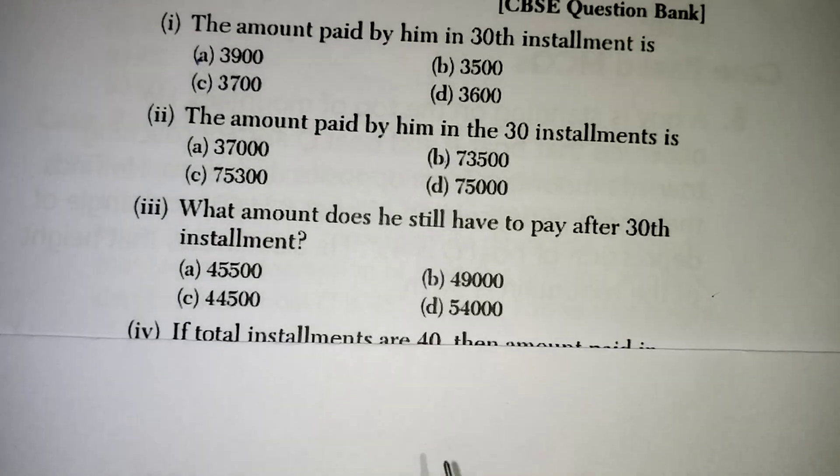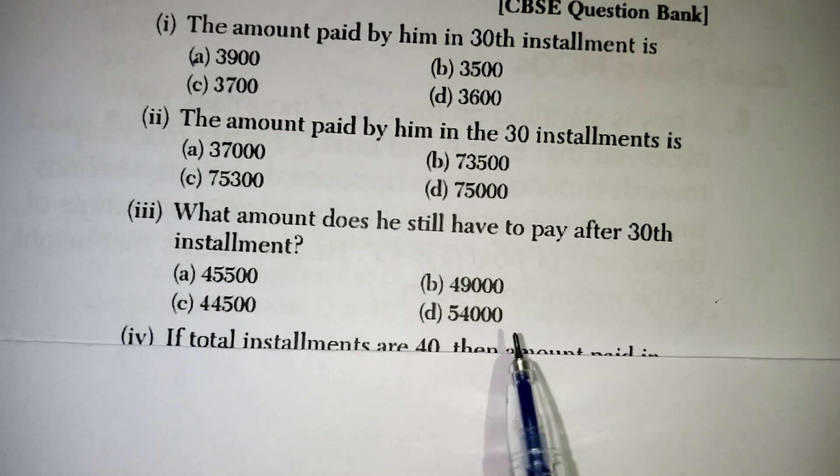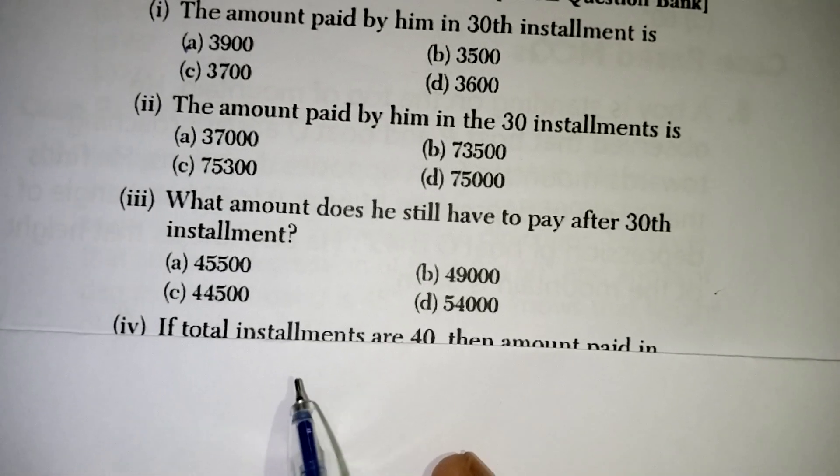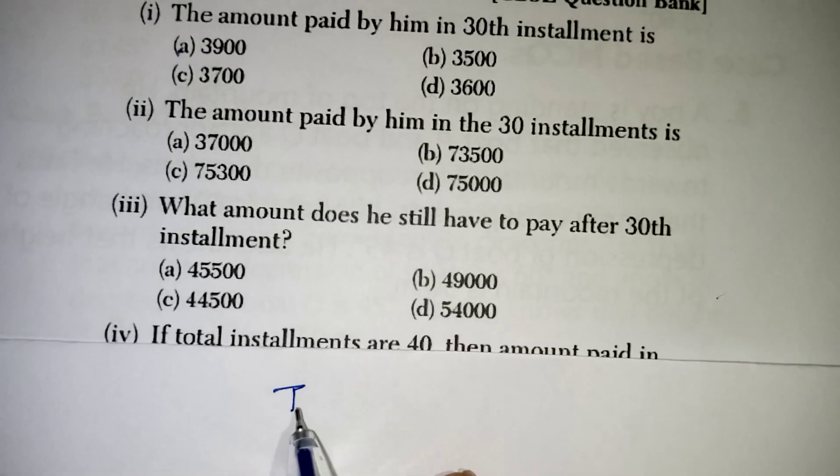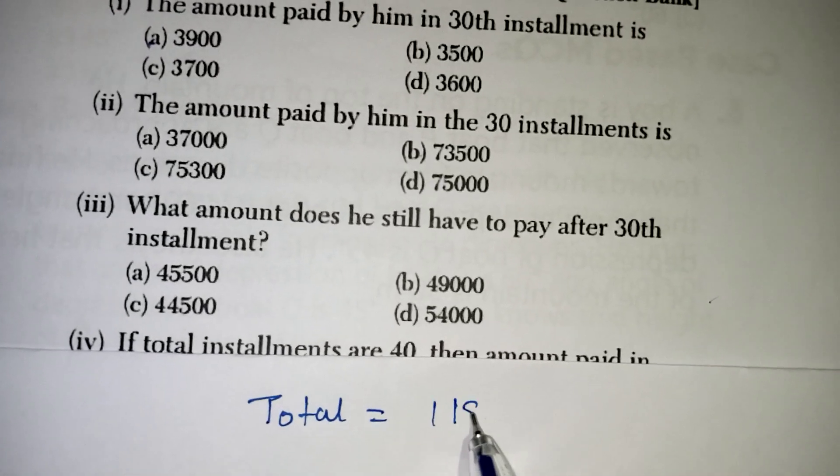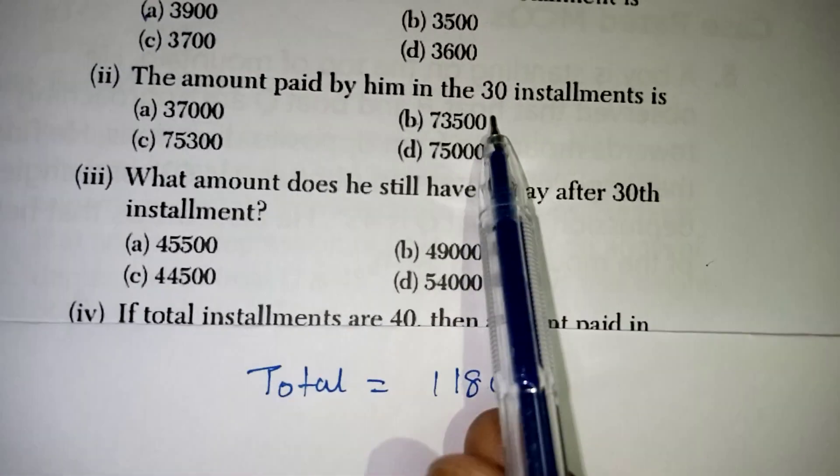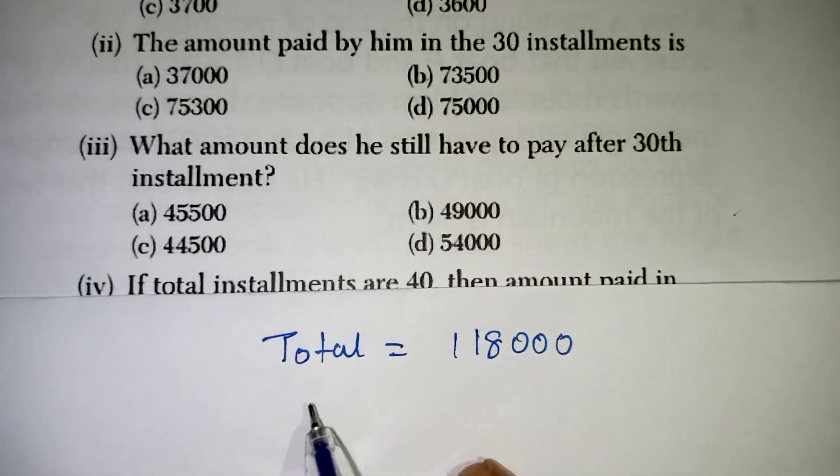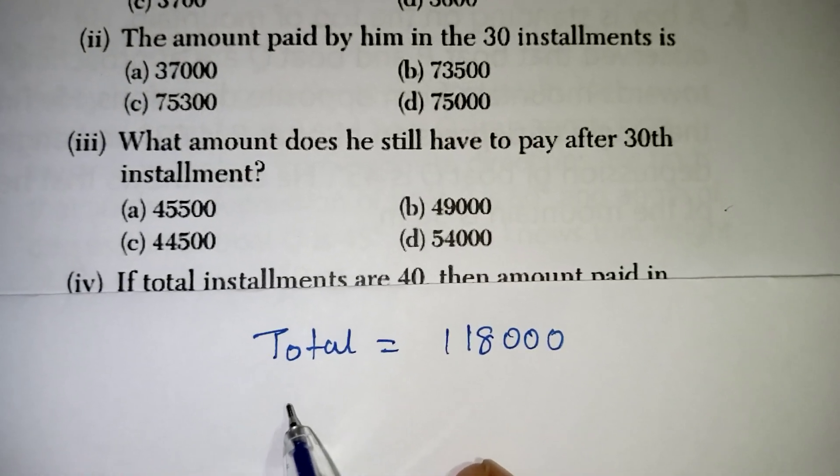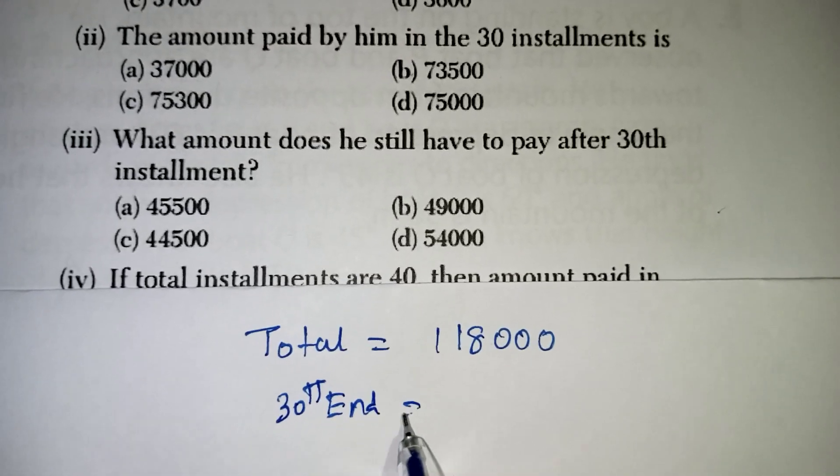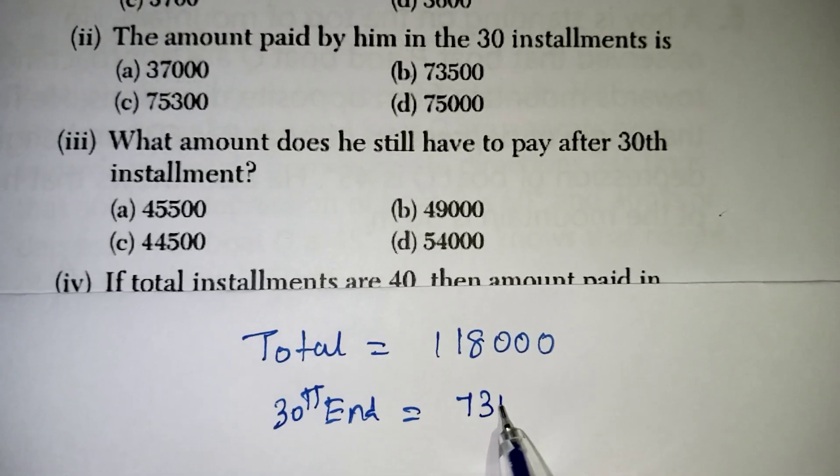Question number 3. What amount does he still have to pay after 30th installment is our question. Actually, in the beginning of the question they have given us the total amount must be paid is 1 lakh 18,000. Now, we have found out the 30 installment amount is 73,500 rupees. Up to the 30th installment ending we have paid 73,500.